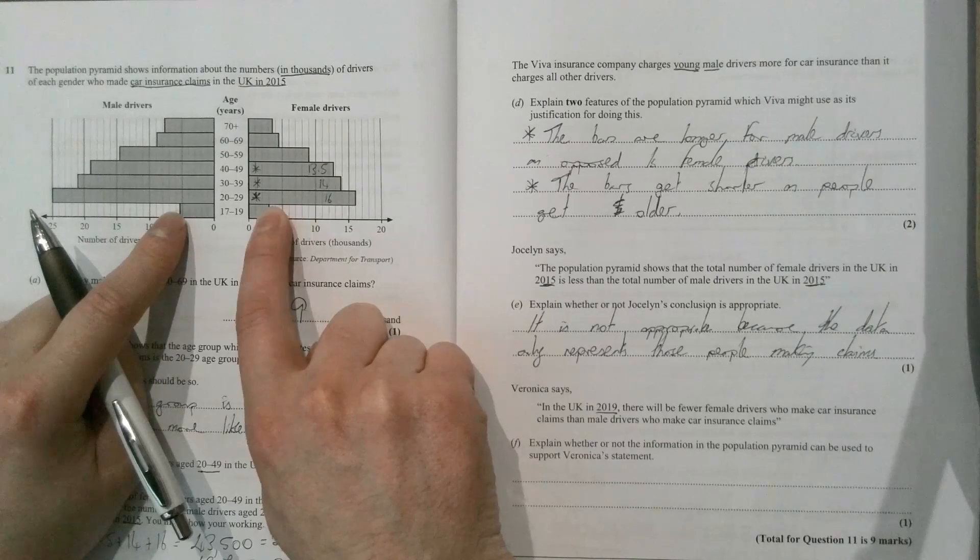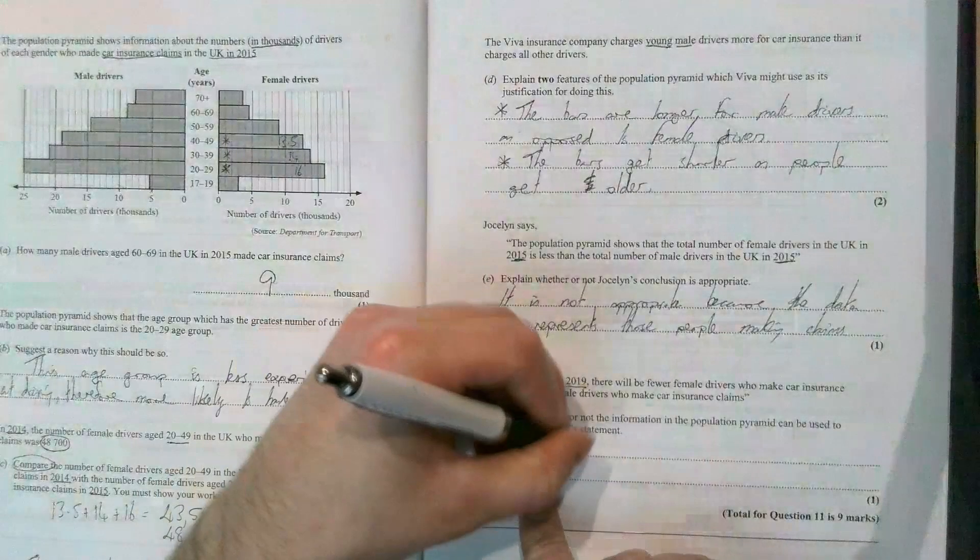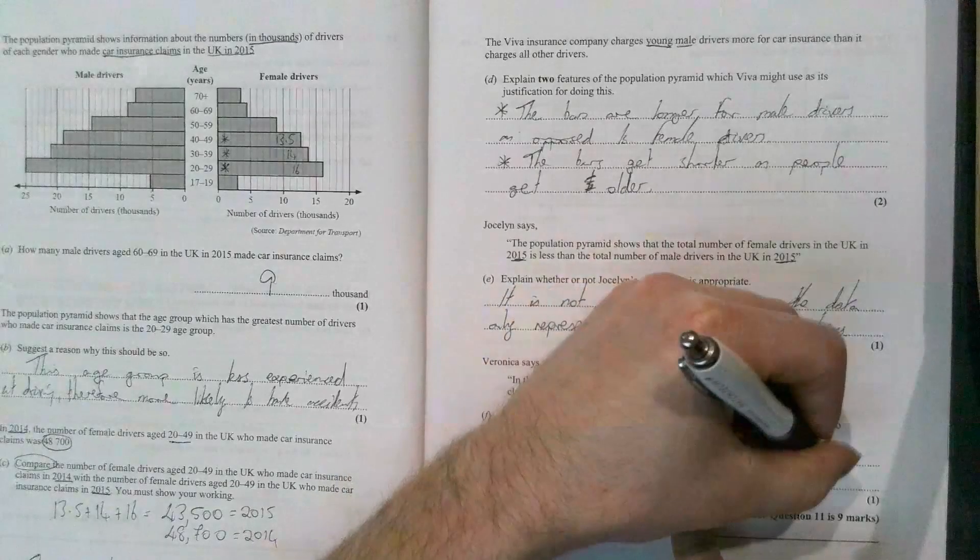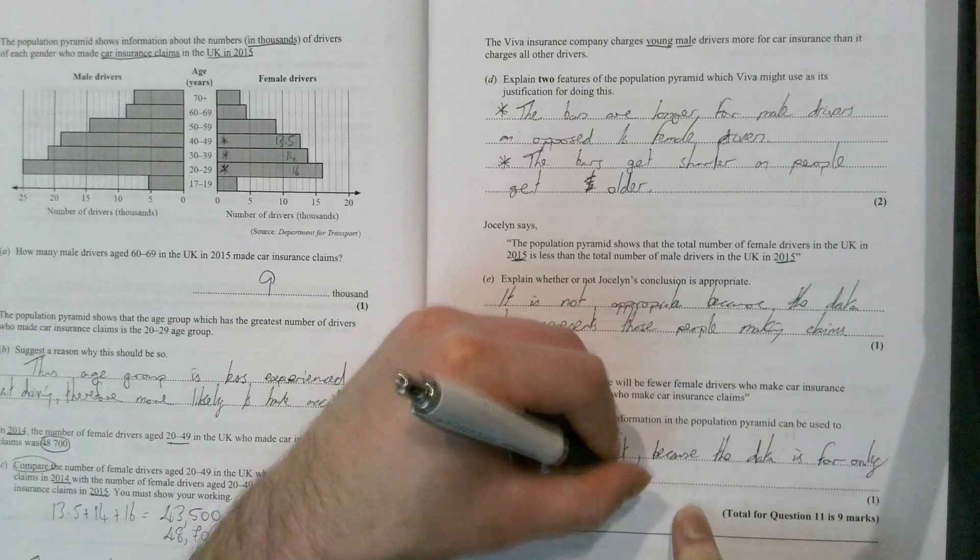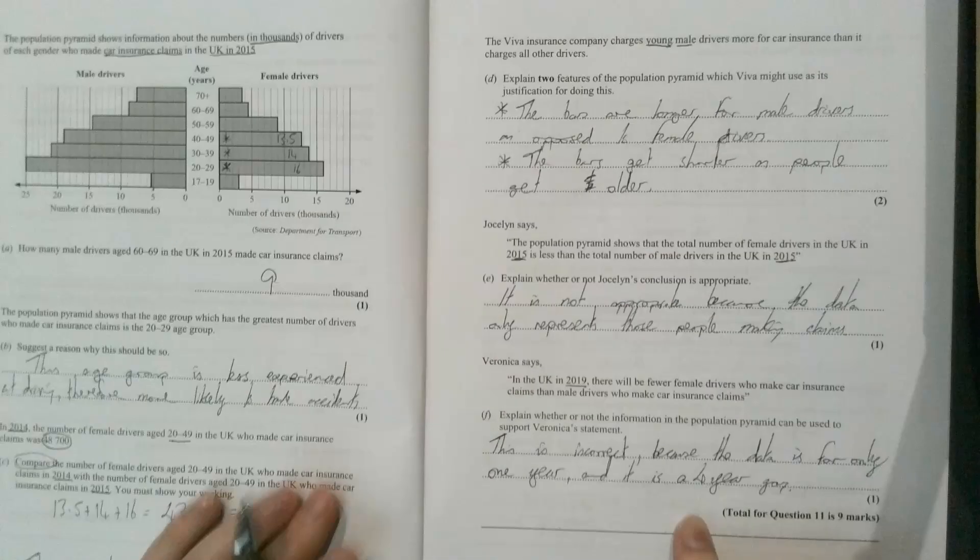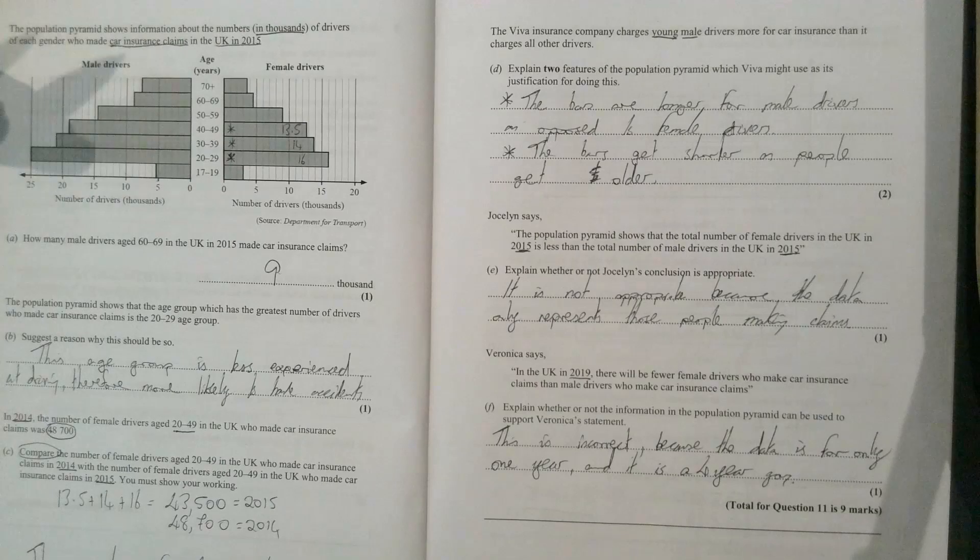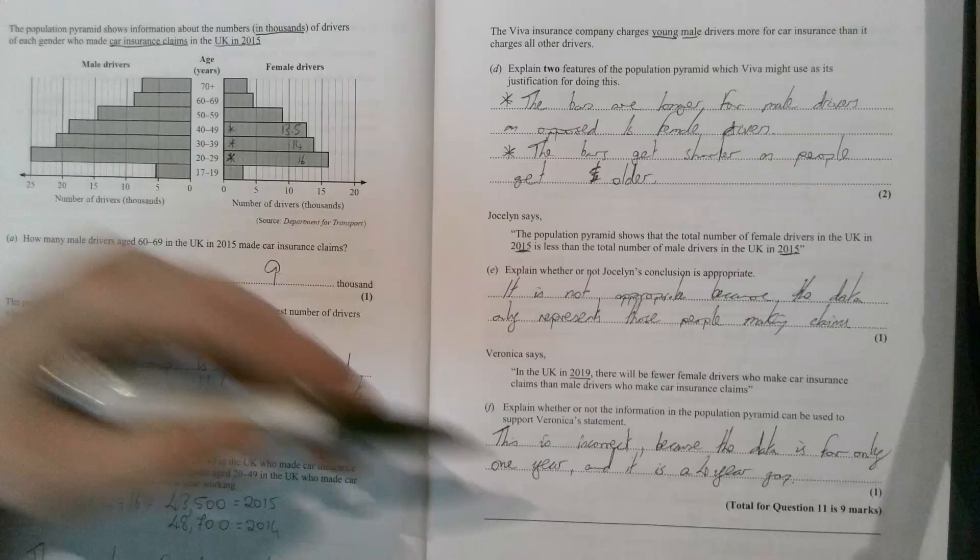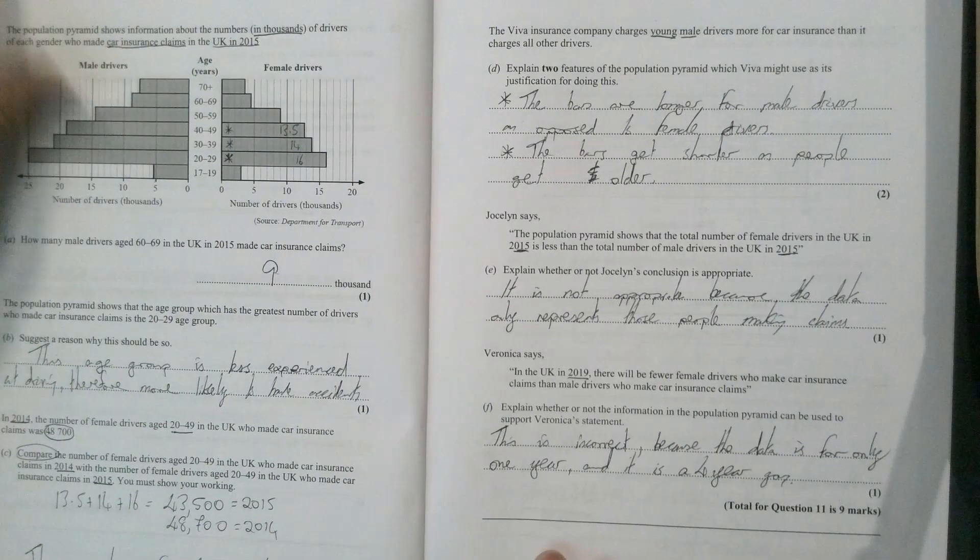Because the data is for only one year, and it is a four year gap. If we had the information for, say, 2013, 2014, and 2015, and it looked like there was a trend happening, we could then make some conclusions or predictions about 2016 because we had enough data and a trend to go off of. But when it's for only one year, and there's a four year gap, a lot can happen in four years that would change that and would make our predictions inaccurate.